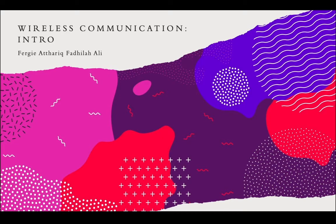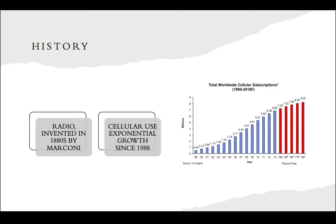Let's get started. First slide: the history of wireless communication. Wireless communication has been around since ancient times — people used smoke signals or carrier pigeons to communicate over long distances. In the 1880s, Marconi invented radio, which uses air to propagate electromagnetic waves. This radio had a huge influence and was widely used in World War II, until cellular use began to be commercialized.